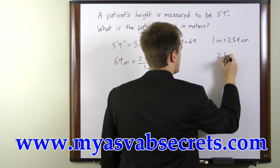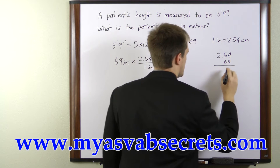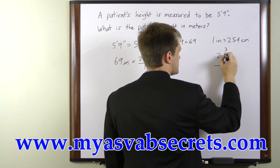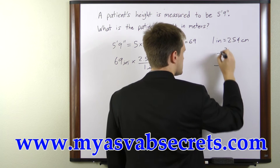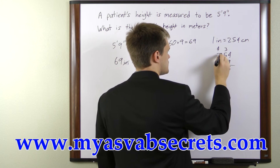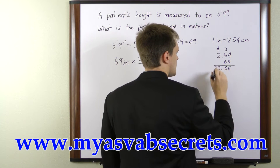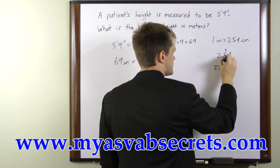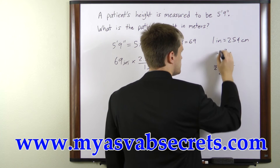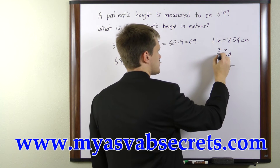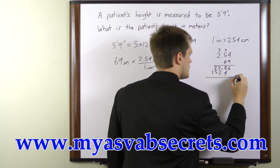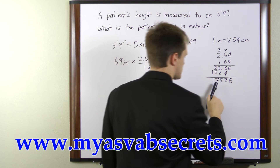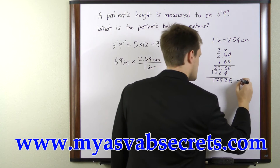So 2.54 times 69. 9 times 4 is 36. 9 times 5 is 45 plus 3 is 48. 9 times 2 is 18 plus 4 is 22. 6 times 4 is 24. 6 times 5 is 30 plus 2 is 32. 6 times 2 is 12 plus 3 is 15. Adding these up gives us 175.26 centimeters.